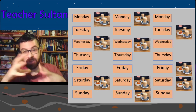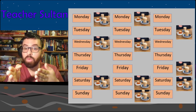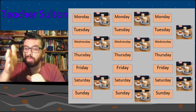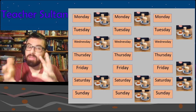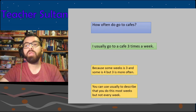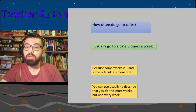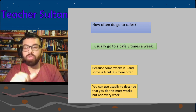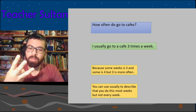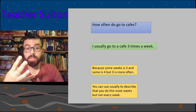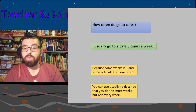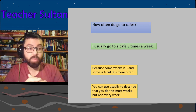If frequency varies each week, use 'usually.' For example: one week you go to a cafe three times, next week four times, the week after three times. You'd say 'I usually go to a cafe three times a week' — because most weeks it's three. Use 'usually' when you do something most weeks but not every week.